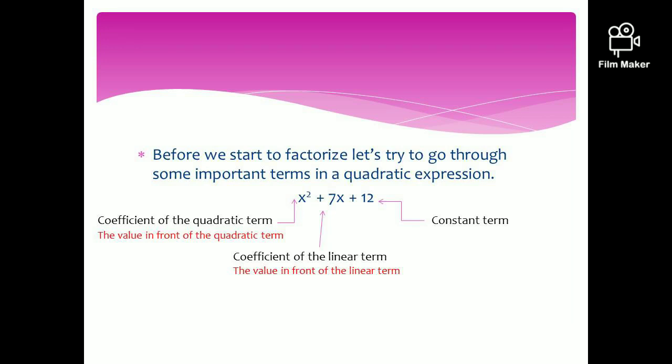Before we start this topic, we have to be a little bit clear about certain terms which are frequently used. The first one is the coefficient of the quadratic term. The coefficient of the quadratic term is the number in front of the quadratic term. From this example, the number in front of x squared is 1. Therefore, the coefficient of the quadratic term for this expression is 1.